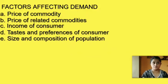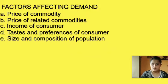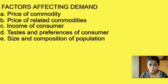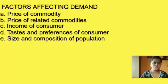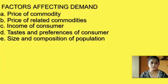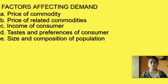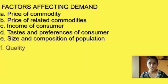The next factor is size and composition of population. Demand for commodities will increase if there is a large population. If the country is overpopulated, demand for necessities will be more and for luxuries lesser. An increase in population will increase demand and vice versa. The composition of population also decides the type of goods demanded in the market.